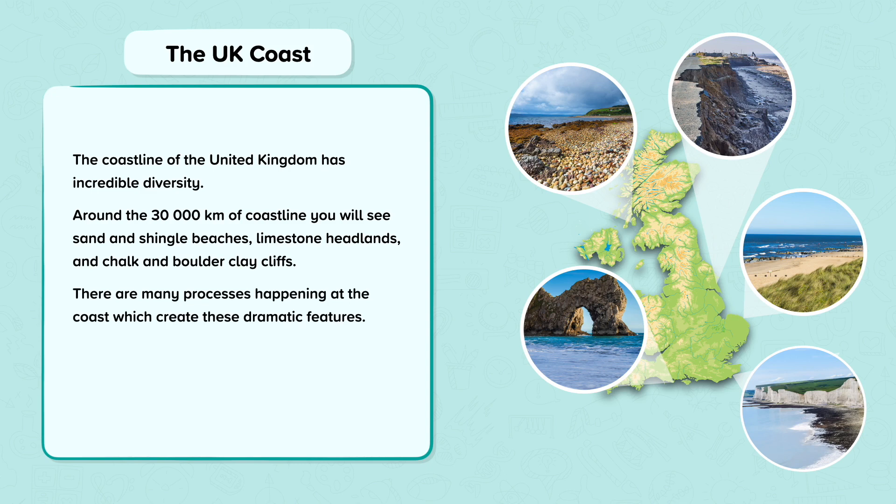There are many processes happening at the coast which create these dramatic features. Marine processes are the sea-based changes which affect the shape of the coastline, and subaerial processes are the land-based changes above the sea line which affect the shape of the coastline. This includes mass movement and weathering. This nugget focuses on subaerial processes, in particular, exploring the process of weathering.